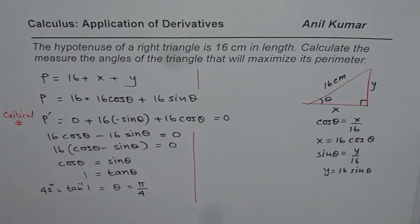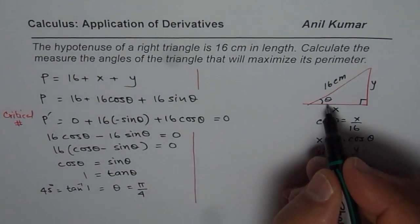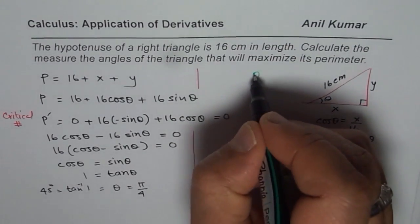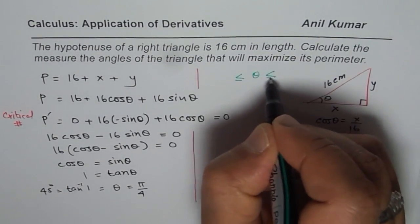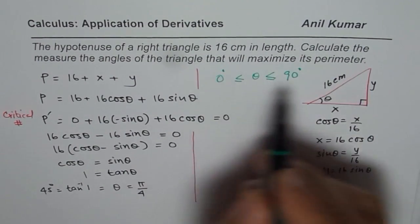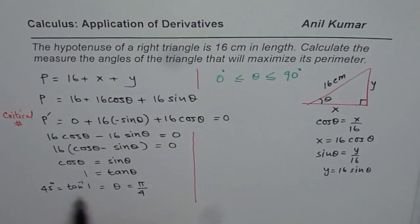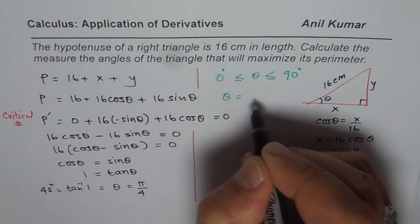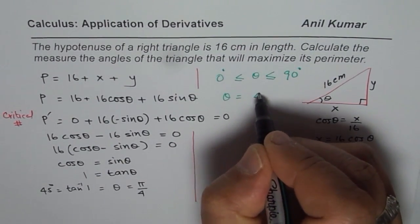Well, we know that angle theta in a right-angle triangle has got boundary conditions as 0 to 90 degrees. So that is the boundary condition. The critical number is theta equals to, let us say, 45 degrees.